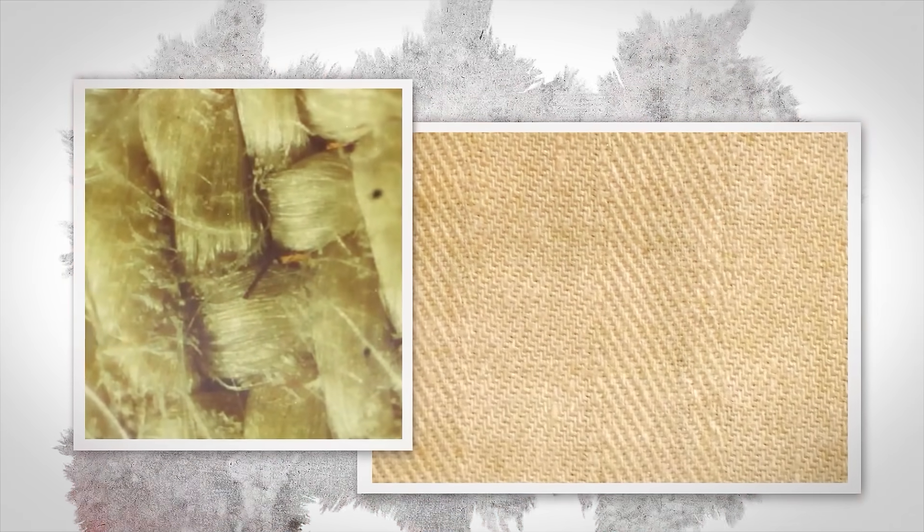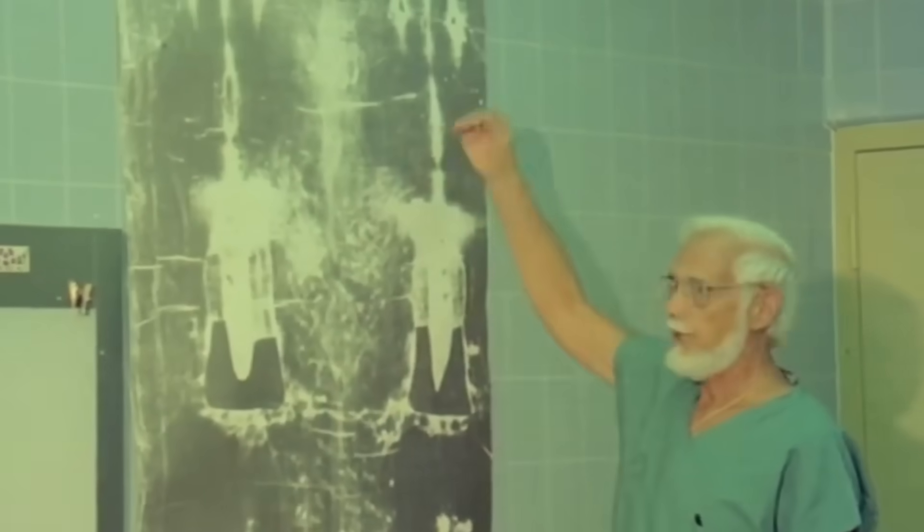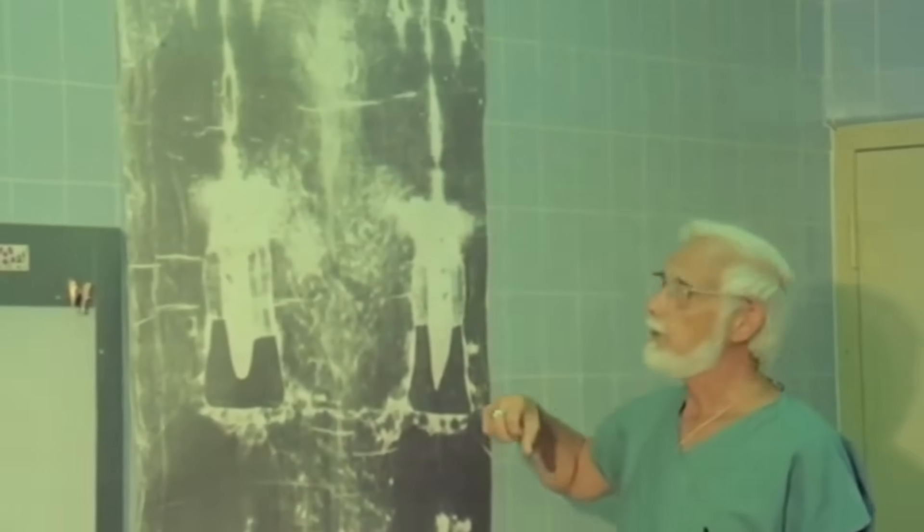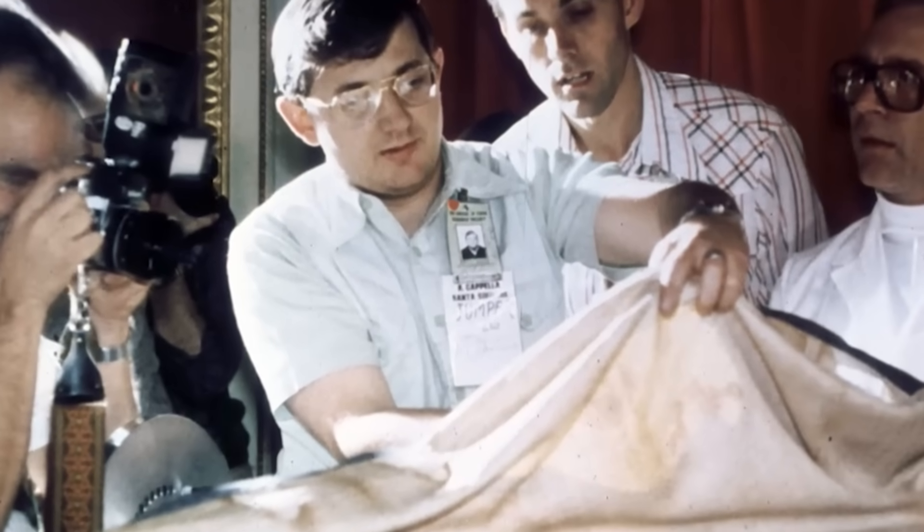The sample threads were coated with a plant gum and were interwoven with cotton fibers, whereas the rest of the shroud is pure linen. He also found traces of a dye. His conclusion was explosive. The sample that was carbon dated wasn't part of the original cloth at all. It was from a patch, a medieval reweave expertly done to repair damage.